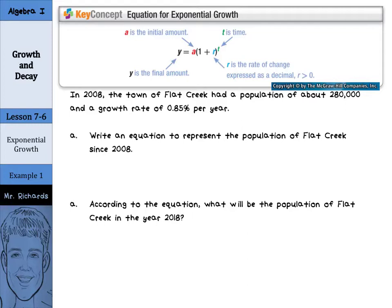Now, we have an equation for exponential growth. Our equation is y, which is the final amount, is going to equal a, the initial amount, times the quantity 1 plus r, where r is the rate of change expressed as a decimal, to the t power.